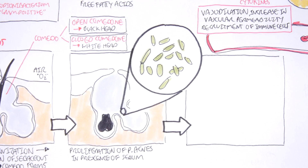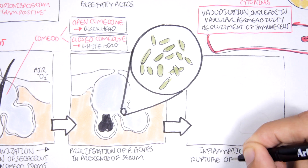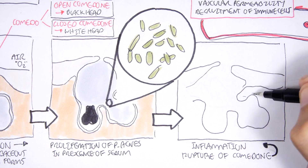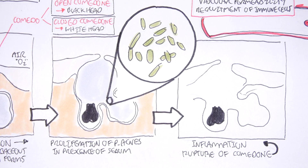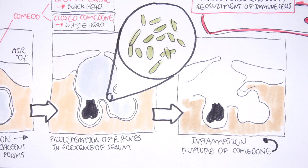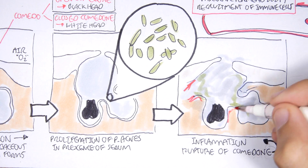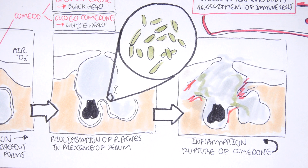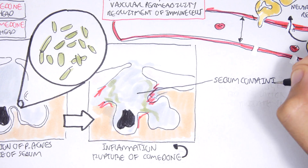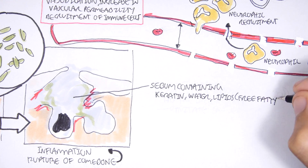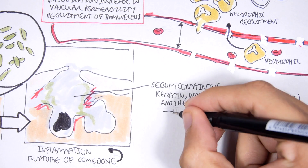This cycle keeps continuing, and eventually the comedone will rupture — either because it is popped by the individual or through self-rupture. This leads to inflammation, which is the final stage of acne pathogenesis. This stage is often self-limiting, but rupturing of the comedone can leave some scarring craters depending on how big it is. When the comedone ruptures, it spills out the sebum substance, which contains keratin, water, lipids, free fatty acids, and the bacteria — P. acnes — triggering the inflammatory response.